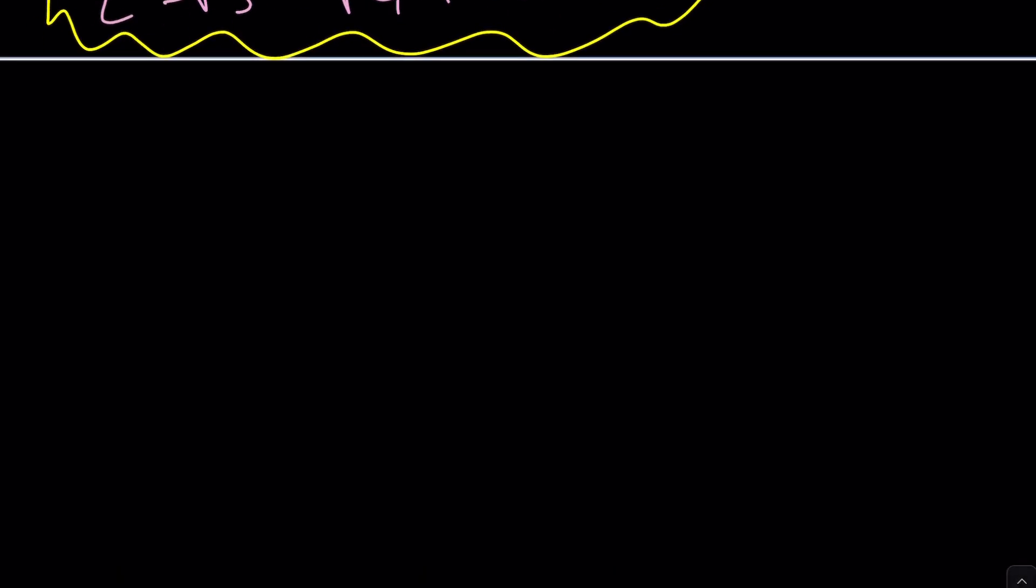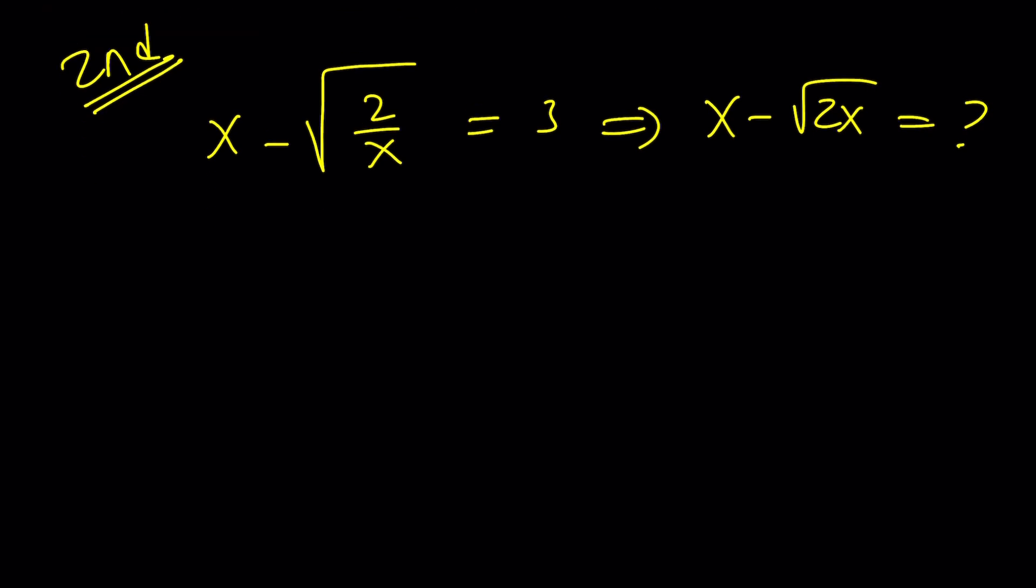Now, here's the fun part, and thank you MathCon for this beautiful problem, and keep them coming. We have x minus the square root of 2 over x equals 3, and we're supposed to evaluate from here x minus the square root of 2x. The first method is really cumbersome, because we have to solve a cubic. Isn't there another way to do it? Let's find out. I'm going to go ahead and start with this.